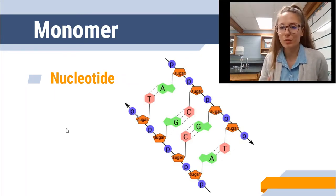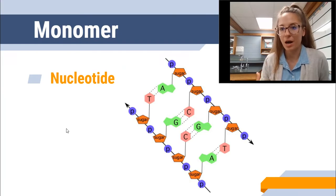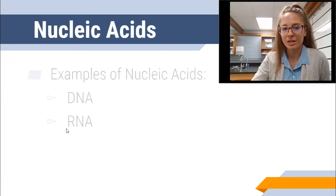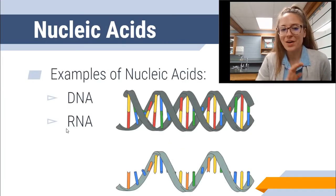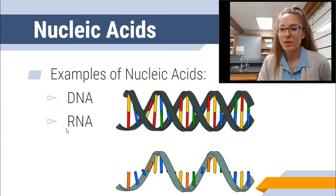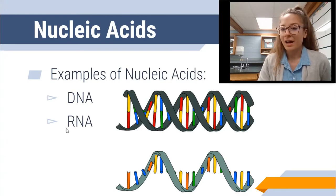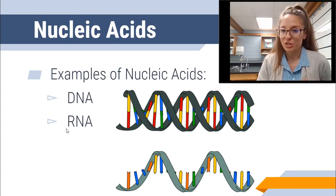Remember, monomers are the small repeating unit that make up a polymer. Now some examples of nucleic acids include DNA, which stands for deoxyribonucleic acid. That is where your genetic information is stored.